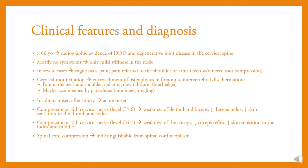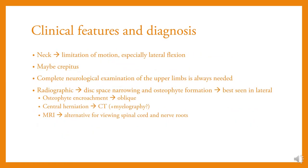Clinical features: patients older than 60 years show radiographic evidence of degenerative disc disease and degenerative joint disease in the cervical spine. Most have only mild stiffness in the neck, but in severe cases there may be referred pain to the shoulder or arms and cervical root irritation from osteophytes in the foramina or intervertebral disc herniation. Compression at the sixth cervical nerve causes weakness of deltoid and biceps, decreased biceps reflex, and decreased skin sensation in the thumb and index finger. Compression at the seventh cervical nerve causes weakness of triceps, decreased triceps reflex, and decreased skin sensation in the index and middle fingers. Spinal cord compression may be indistinguishable from spinal cord neoplasm; limitation of motion especially lateral flexion, and possible crepitus are noted.